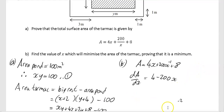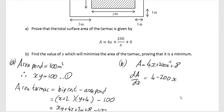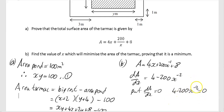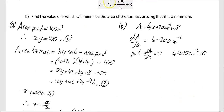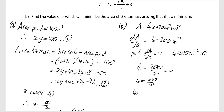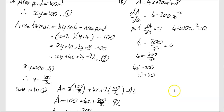To find the minimum value, put dA/dx equal to 0. Converting back: 4 minus 200/x² equals 0, which means 4 equals 200/x², so 4x² equals 200, giving x² equals 50.